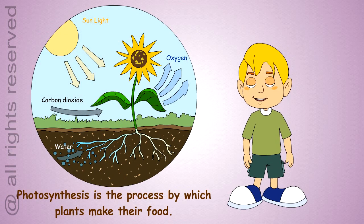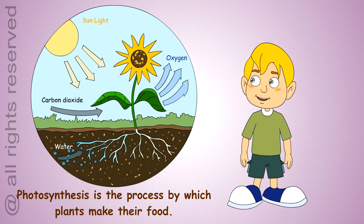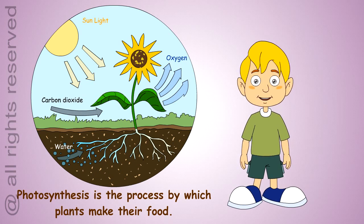After germination, it makes its food by the process called photosynthesis in the leaves, by using a gas called carbon dioxide from air, water from the soil and the sunlight.